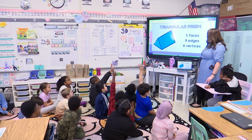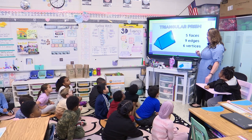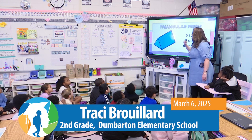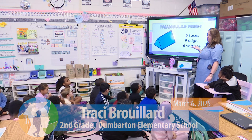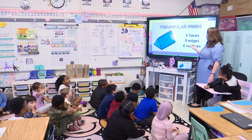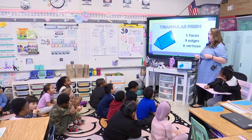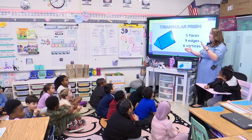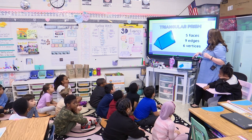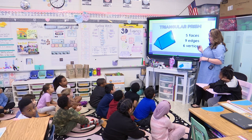Then we have the triangular prism. It's kind of like the rectangular prism, but the two faces on the ends are triangles. Think of a tent when you go camping — the sides are rectangles, but the two ends are triangles. It has five faces, nine edges, and six vertices. You'll learn more about this one when you get to third grade.